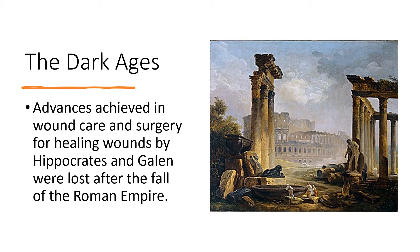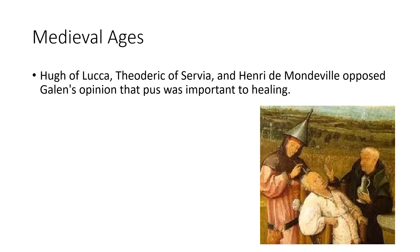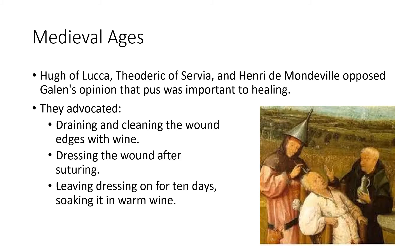Unfortunately, during the dark ages, the advances achieved in wound care by Hippocrates and Galen were lost after the fall of the Roman Empire. In the Middle Ages, surgeons Hugh of Lucca, Theodoric of Cervia, and Henry de Mondeville opposed Galen's view that pus was important to healing. Instead, they advocated draining and cleaning wounds, dressing them with wine after suturing, and soaking them in warm wine — in retrospect a good idea, since alcohol has antiseptic properties.